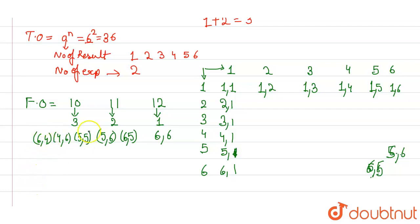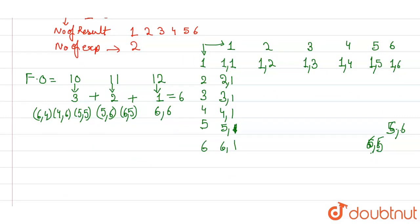So total there are 3 plus 2, 5 plus 1, 6 cases. Now, to calculate probability for any event, the formula is favorable outcomes upon total outcomes. Favorable outcomes are 6, total outcomes are 36. That means our answer is 1 by 6.